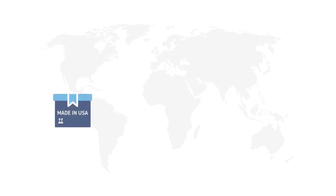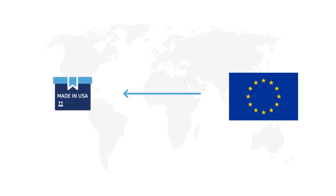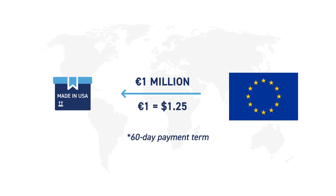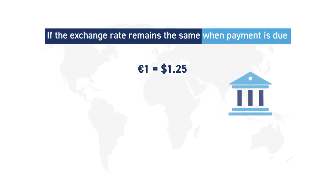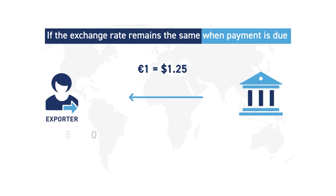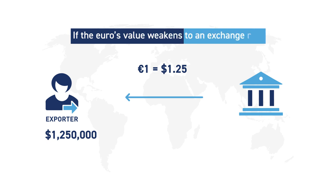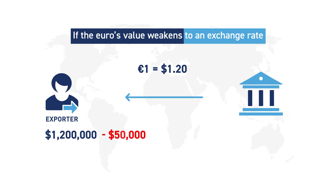For example, U.S. goods are sold to a European company for 1 million euros at an exchange rate of 1 euro to 1.25 U.S. dollars and a 60-day payment term. If the exchange rate remains the same when the payment is due, the U.S. exporter receives 1.25 million U.S. dollars. However, if the euro's value weakens to an exchange rate of 1 euro to 1.20 U.S. dollars during the 60-day payment period, the exporter receives only 1.2 million U.S. dollars — $50,000 less.